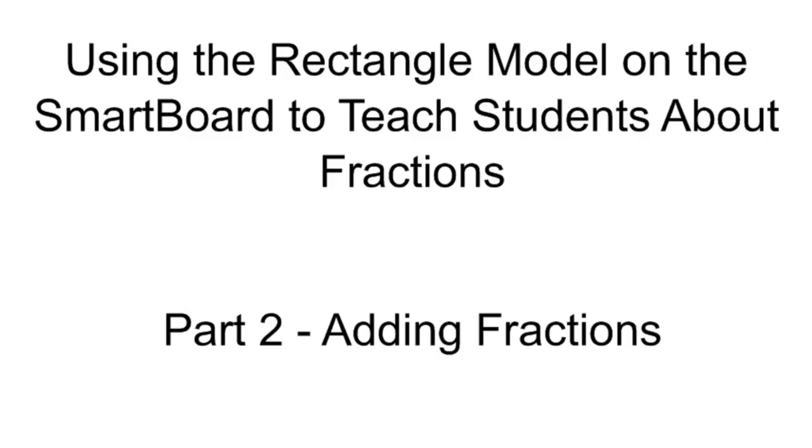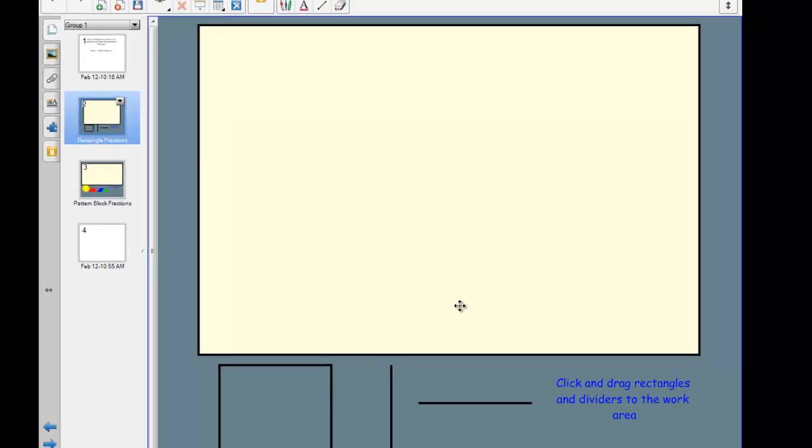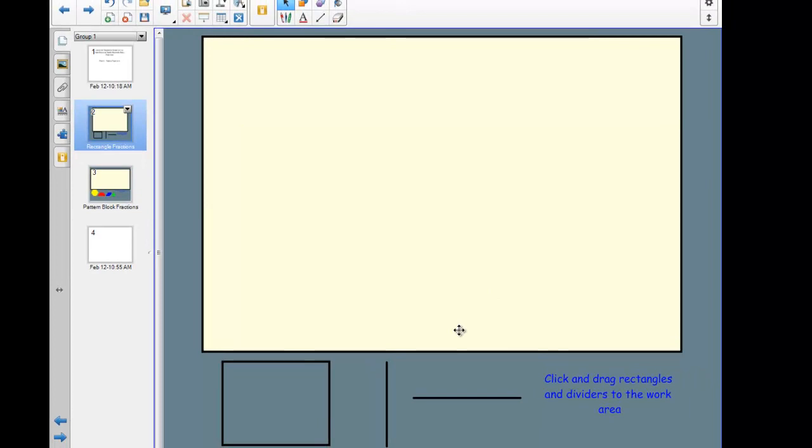I'm going to give you three examples: one adding fractions with like denominators, one adding fractions with unlike denominators, and one adding mixed numbers together. We'll use the same model for each, the rectangle model on our SmartBoard.